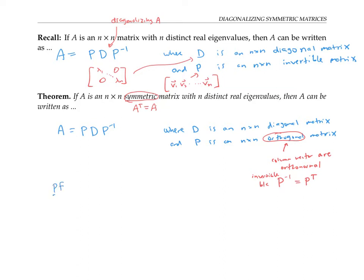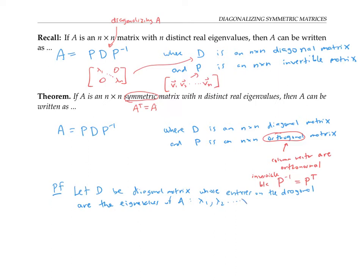So how do we know that this is possible? We're going to use pretty much the same construction as before. We'll let D be the diagonal matrix whose entries on the diagonal are the eigenvalues of A — call those lambda one, lambda two, through lambda n. Now we'll pick an eigenvector for each eigenvalue, calling them v one, v two, through v n, so v one is an eigenvector for lambda one, and so on. From the previous video on symmetric matrices, we know that the eigenvectors v one through v n are all orthogonal to each other.